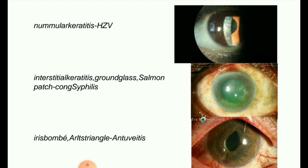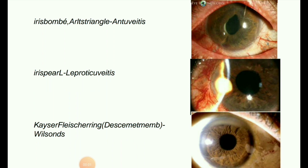Next image: salmon patch — interstitial keratitis, ground glass appearance. Salmon patch in congenital syphilis is seen in Hutchinson's patch; it is a dull orangish-pink area generally without clear boundaries on the cornea, most often found at the periphery. The sign is an indication of interstitial or parenchymatous keratitis, which causes corneal neovascularization.